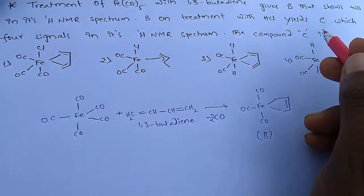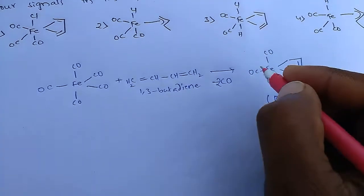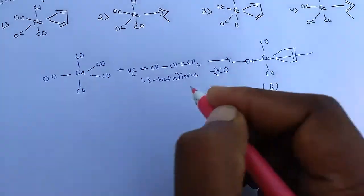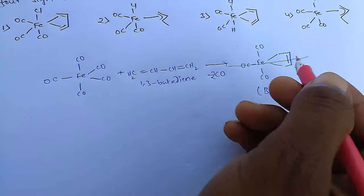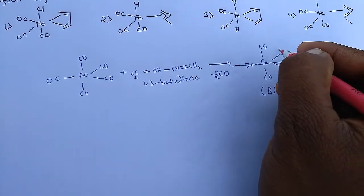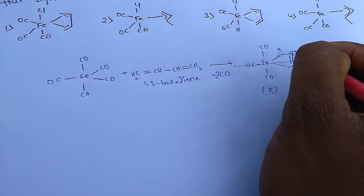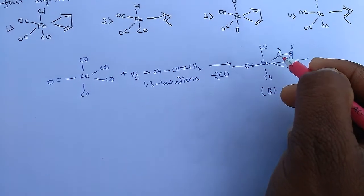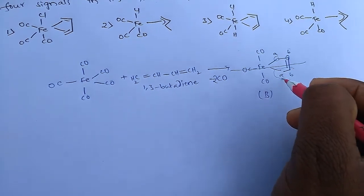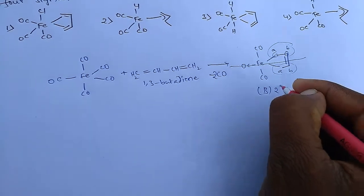The problem tells us that B shows 2 H-NMR signals. If you cut this complex into 2 equal halves, we have hydrogens labeled A and hydrogens labeled B — just 1 hydrogen each. This chemical environment is absolutely equal to the other. Hence, this compound shows only 2 H-NMR signals.